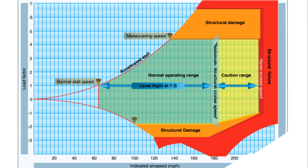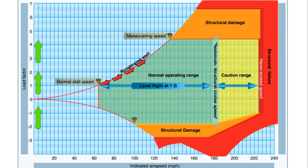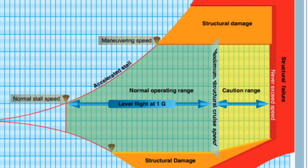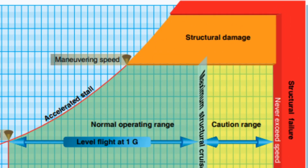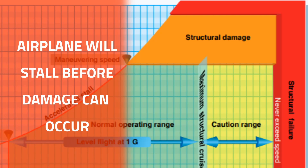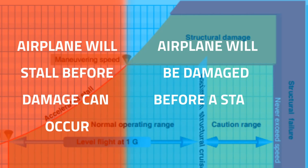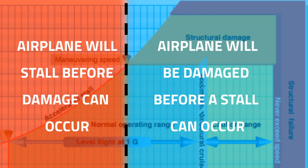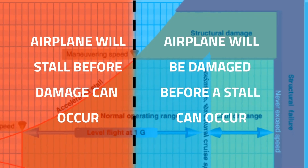Looking back at the chart, load factor increases with stall speed. But for every airplane there's a key airspeed every pilot should know about — called maneuvering speed, or VA. Up to this airspeed, the airplane will stall before you could ever possibly over-G or overload the airplane. If you fly above this speed, you would bend or damage the airplane before you could ever possibly stall. There are different reasons why you might want to fly above or below this airspeed, but it's important to know what VA is in your airplane because it helps you make good decisions.